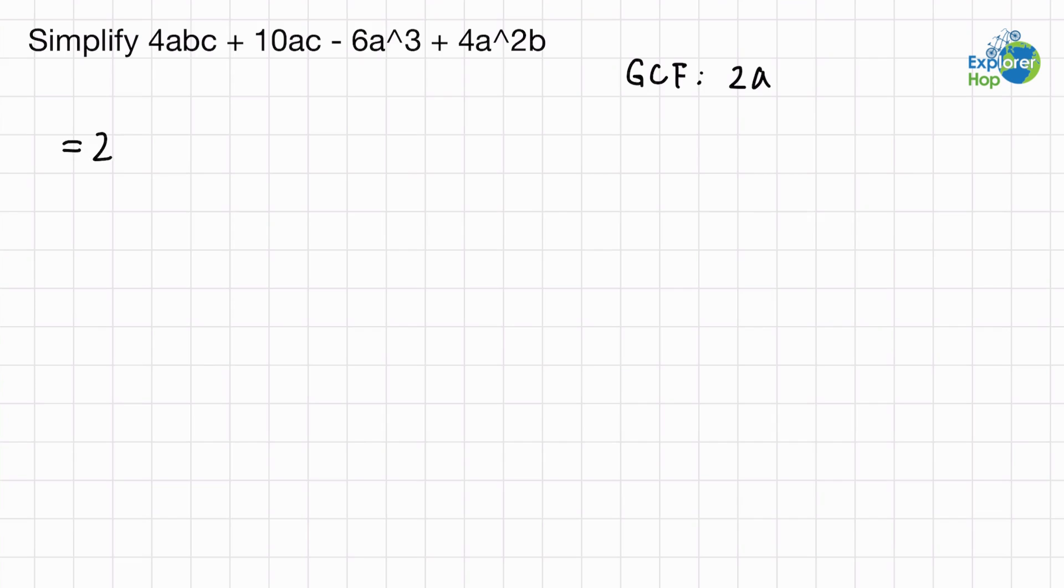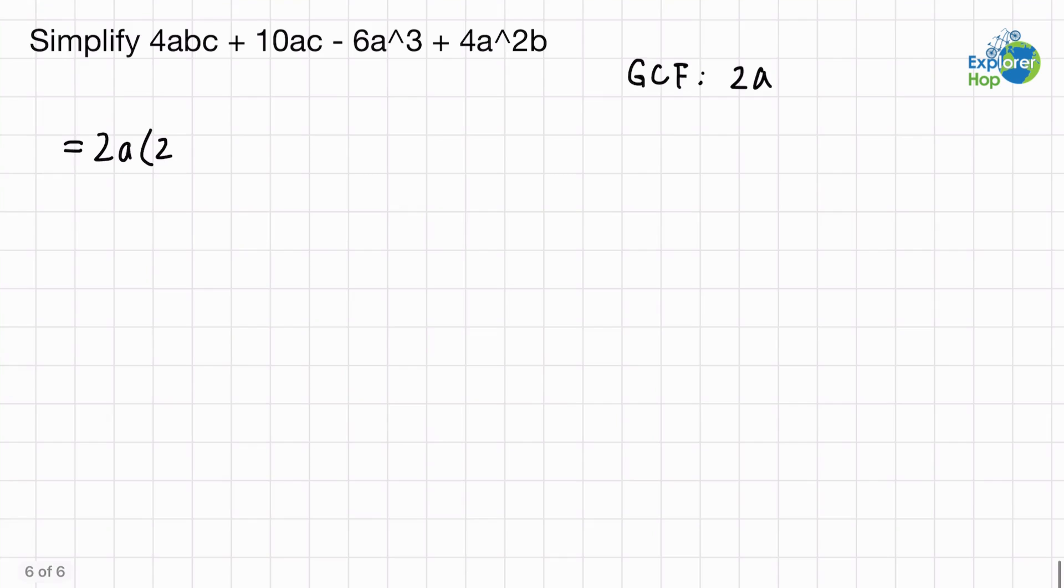So let's first write our greatest common factor on the outside of the bracket, and we start dividing. 4 divided by 2 equals 2, and a divided by a cancels out, so we're left with 2bc.